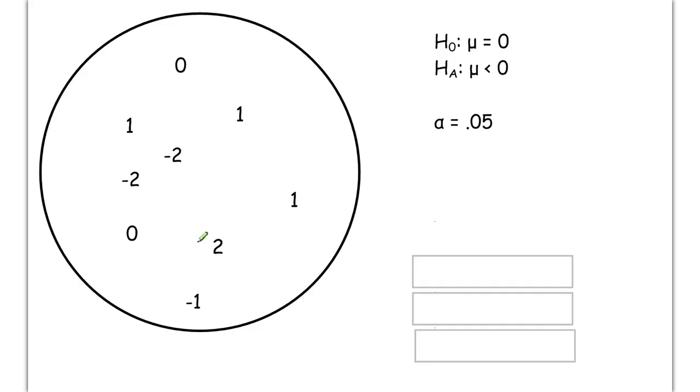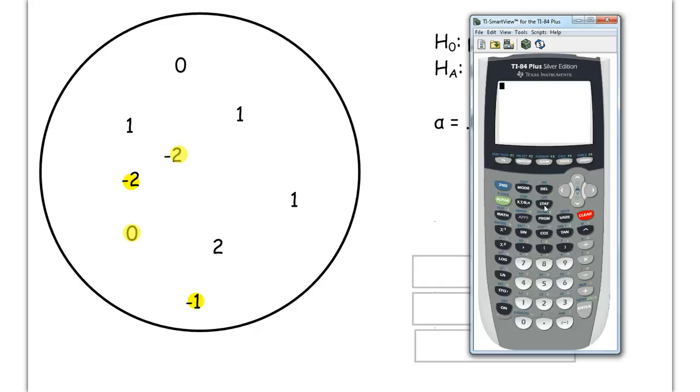So I'm randomly going to pick that one, that one, and that one, and that one. So I randomly picked four values from this population. And what I'm going to do is I'm going to go to my stat list, stat edit, and I'm going to put these numbers here into my stat list. What we're going to do is we're going to run a hypothesis test with these numbers. So they're in there.